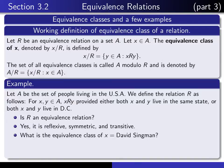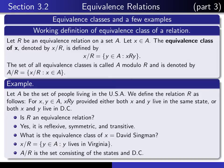And what is the equivalence class of David Singman? I happen to live in Virginia, and so we're asking what is the set of all people in the United States such that I am related to such a person. It's the set of all people who live in the same state as me, namely the set of all people who live in Virginia. So here we're using the notation X slash R — it's the set of all people who live in Virginia. And what is A slash R? A slash R is the set of all possible equivalence classes, so that's the set consisting of all of the states and the District of Columbia.